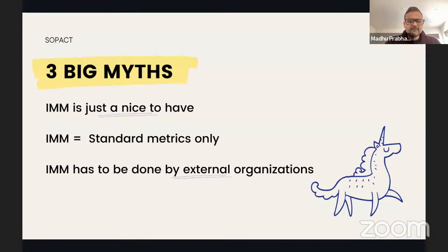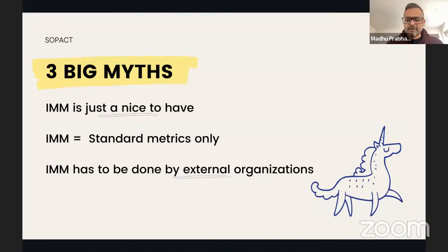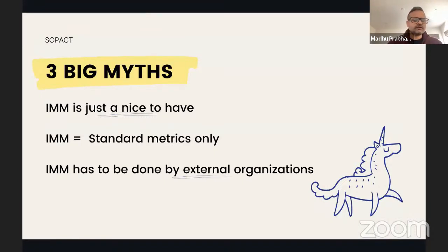There are three big myths. Myth one: it's a nice to have. Myth two: many organizations think they can just pick some standard metrics and collect data on those metrics to inform how their products and services impact stakeholders. Myth three: it has to be done by external organizations — you have to outsource your entire data capacity process. We'll talk through why we think these are myths and how you can overcome them.